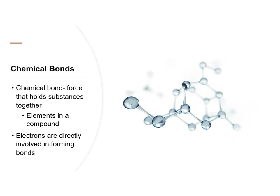Now we're going to talk about bonds. We've talked about how compounds are two or more elements chemically combined — what combines them is the chemical bond. A chemical bond is a force that holds substances, meaning elements in a compound, together. There's a force that actually keeps the two hydrogens and the one oxygen in water from just separating, and we call that force a bond.